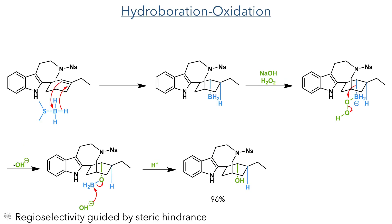The remaining alkene was then subject to a hydroboration-oxidation sequence. Borane dimethyl sulfide undergoes a concerted addition to this alkene, preferentially adding from the bottom face of the ring, with the boron adding to the less sterically hindered side of the alkene. Reacting this adduct with sodium hydroxide and hydrogen peroxide allows the peroxide to attack the boron centre, forming a negatively charged borane intermediate that undergoes rearrangement forming a carbon-oxygen bond and eliminating hydroxide. This hydroxide can then attack the boron, eliminating the alkoxide that is then protonated upon workup to form the hydroxylated compound in 96% yield.